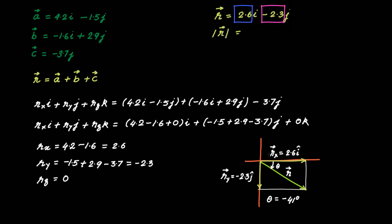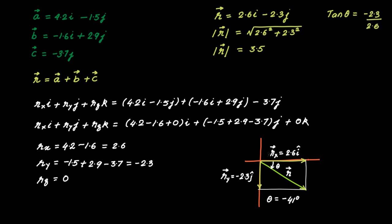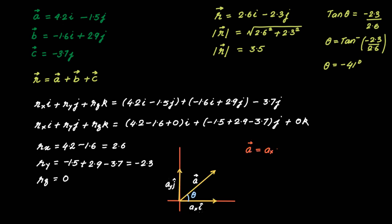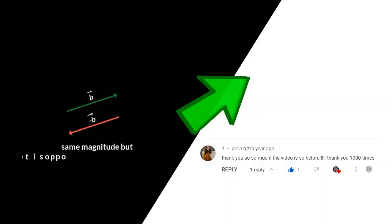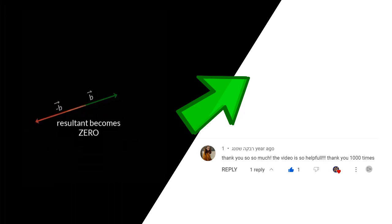The magnitude of vector r equals √(2.6² + (−2.3)²) equals 3.5 meters. The angle from the positive x-axis is tan θ = −2.3/2.6, so θ equals tan⁻¹(2.3/2.6) equals −41°. In general, for vector a = ax·i + ay·j, its magnitude is √(ax² + ay²) and its direction is tan⁻¹(ay/ax). You can see how vector components and unit vectors make working with vectors much easier.